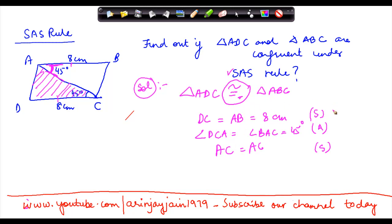Now because the side, two sides and the angle between these two sides are equal, therefore we say that triangle ADC is congruent to triangle ABC under the S.A.S. rule.